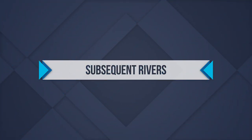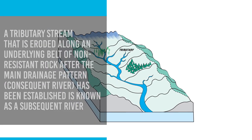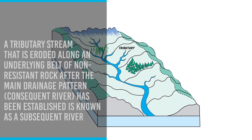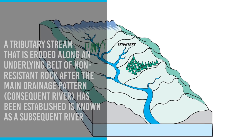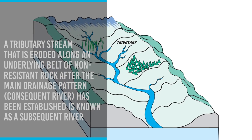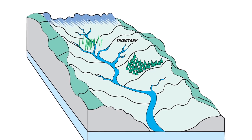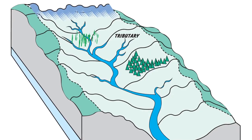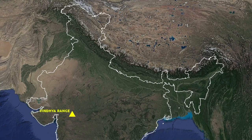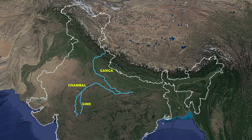Subsequent Rivers: A tributary stream that is eroded along the underlying belt of non-resistant rock after the main drainage pattern (consequent river) has been established is known as a subsequent river. Due to the northward slope of Peninsular India towards the Great Plain, rivers originating from the Vindhya and Satpura ranges flow northward into the Ganga system. The Chambal, Sindh, Ken, Betwa, Tons, and Son meet the Yamuna and the Ganga at right angles.